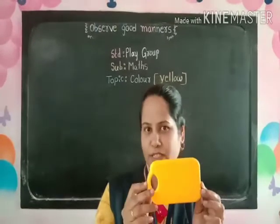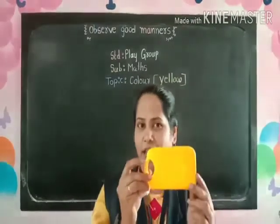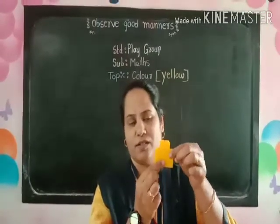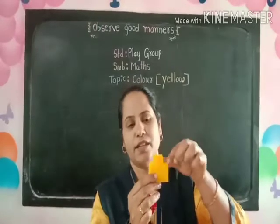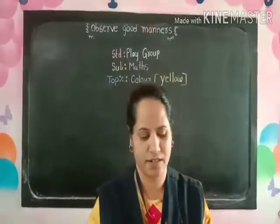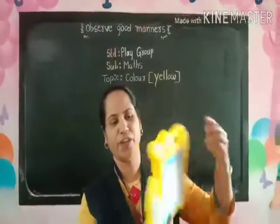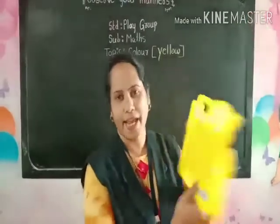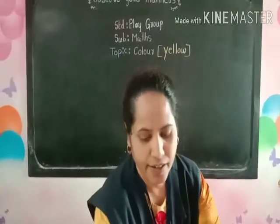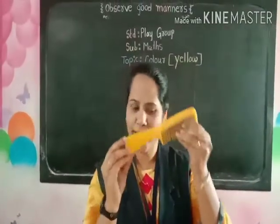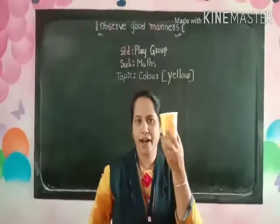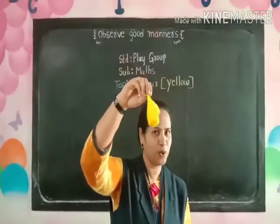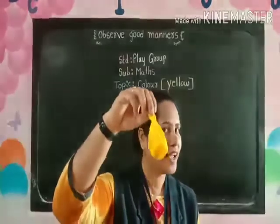And this is a cutting board. This is yellow color. This is a box — this is also yellow color. This is a cone, this is also yellow color. This is a cup, this is also yellow color. And this is a balloon — it is also yellow color.